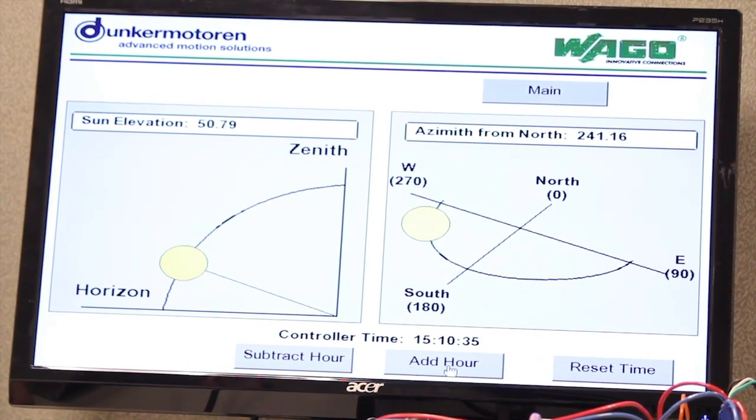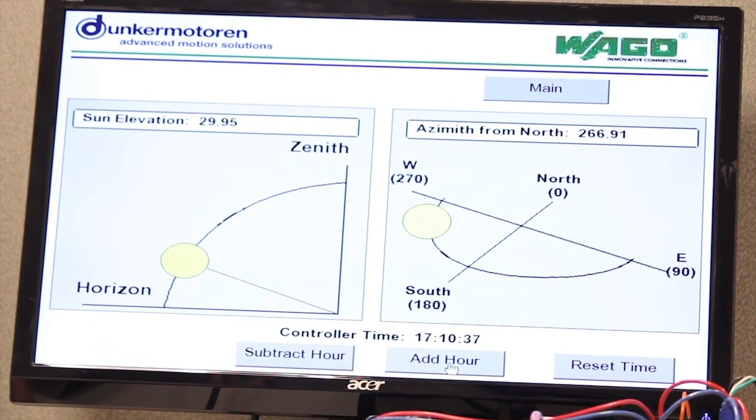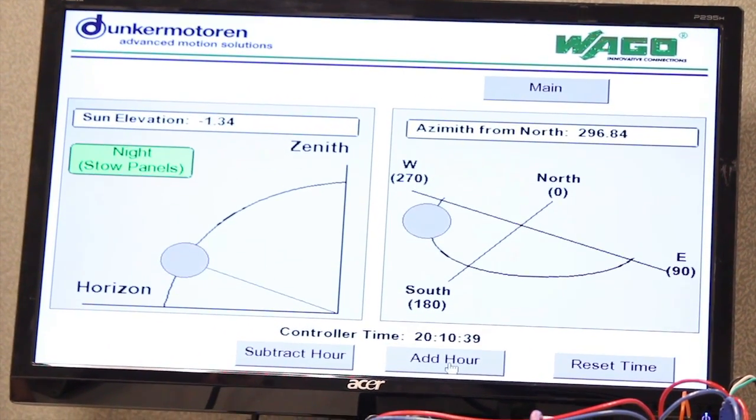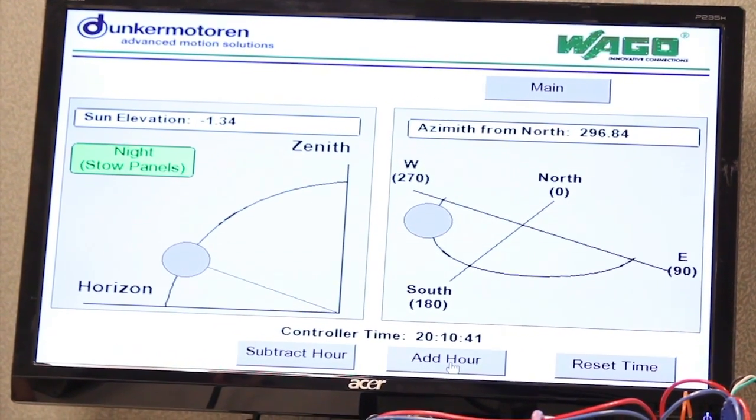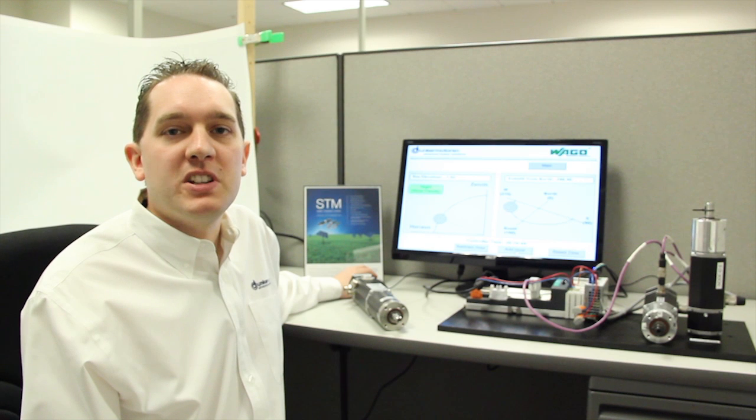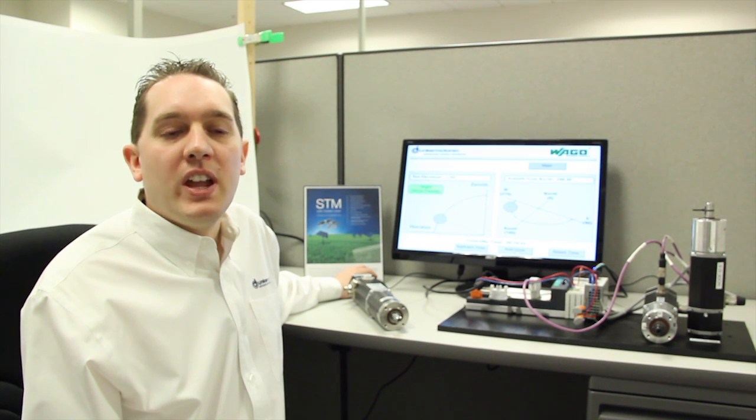The motors close their own position loops due to their integrated controllers and feedback devices. Optionally, STM motors can also be configured to take over mission critical control if the network should go down.